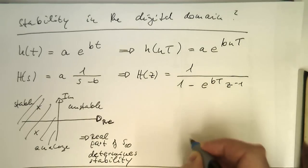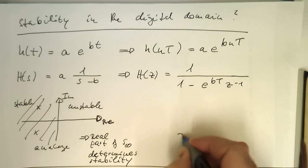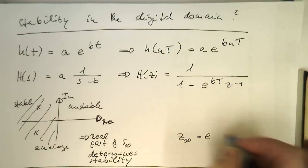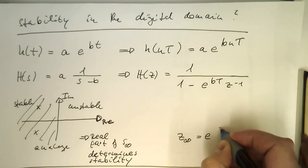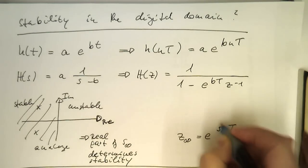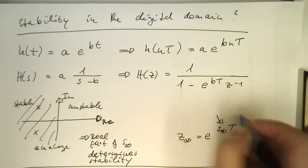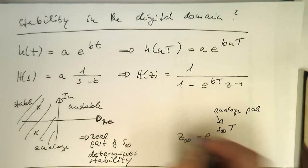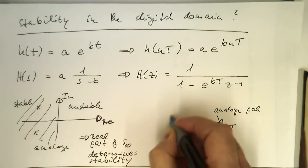Now we've got our translation rule here. Our z infinity is e to s infinity T. Let's call this here s infinity T. That's our analog pole and that's our digital pole.